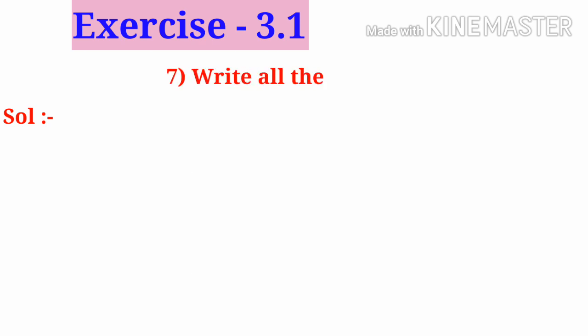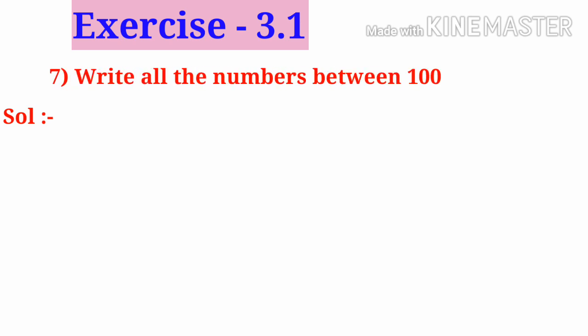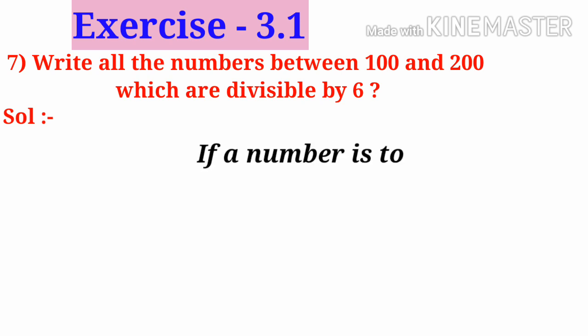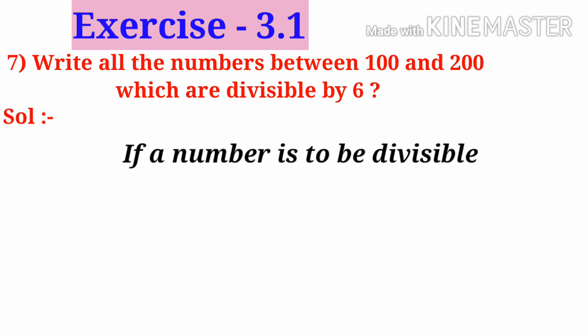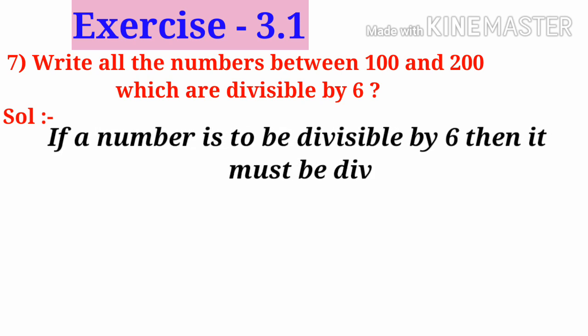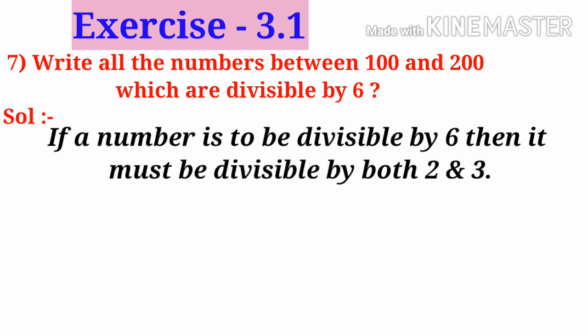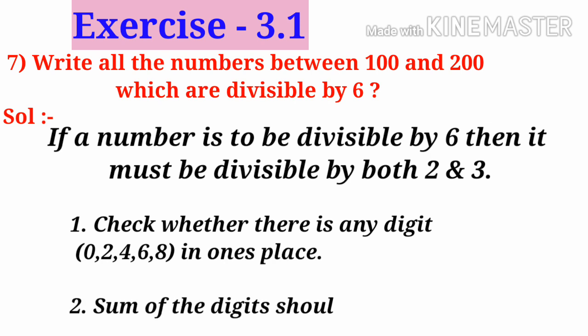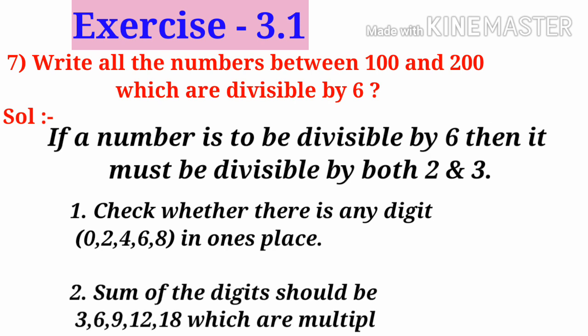Seventh problem: Write all the numbers between 100 and 200 which are divisible by 6. If a number is to be divisible by 6, it must be divisible by both 2 and 3. First, check whether there is a digit 0, 2, 4, 6, or 8 in the one's place. Second, the sum of the digits should be a multiple of 3, such as 3, 6, 9, 12, or 18.